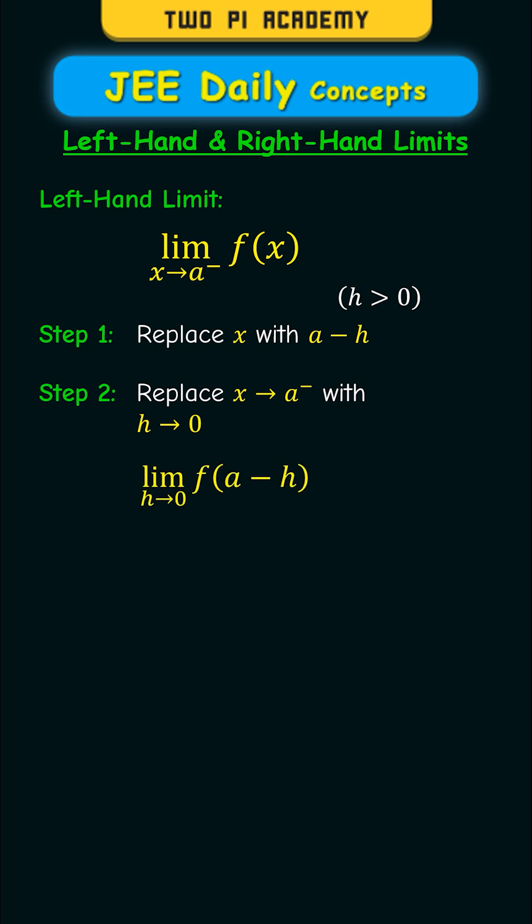This uses the following limit. And finally, you just have to simplify this and replace h with 0. For the right-hand limit, the process is almost the same, except you'll replace x with a plus h, and x tends to a plus with h tends to 0. As an example,